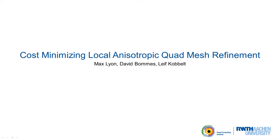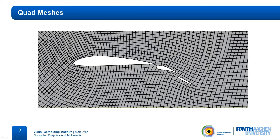Hello, my name is Max Leong and I am going to present our work titled Cost-minimizing Local Anisotropic Quad Mesh Refinement. As the title suggests, we are interested in the refinement of quad meshes. Quad meshes are very useful, as their edges can naturally be aligned to the principal curvatures of the underlying surface, and they have the flexibility to create strongly anisotropic cells without causing excessively small inner angles. Therefore, they are the preferred mesh data structure in many applications, such as finite element methods and also in animation.